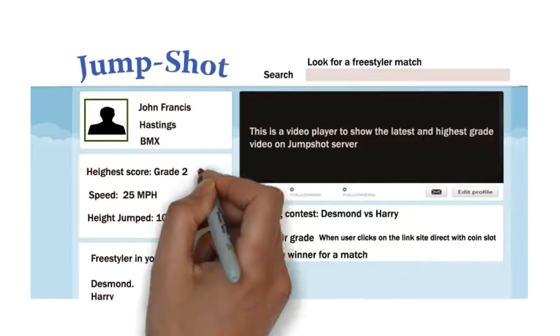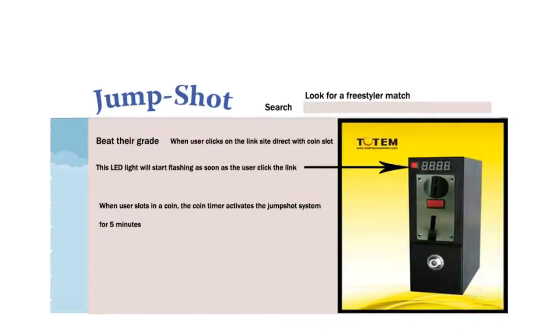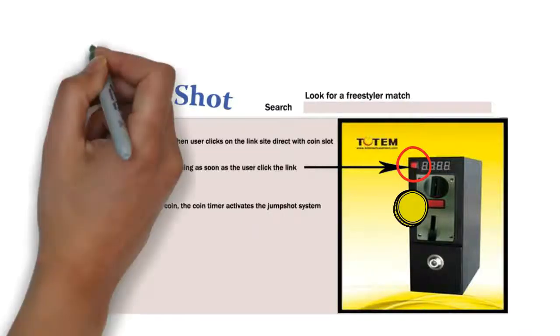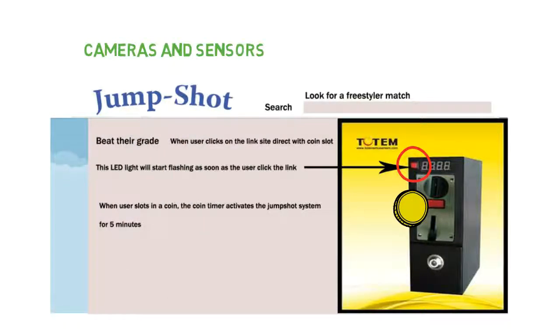The sitting height measurement will be put into consideration every time the user makes a jump. When a user logs into the profile page and clicks a link to the coin timer, the LED light on the coin timer will start flashing. The user has to slot in a coin into the timer. The timer will activate the cameras and sensors for five minutes, which will start after 10 seconds countdown.